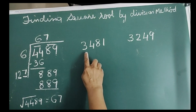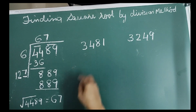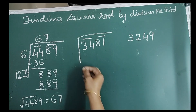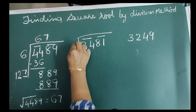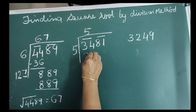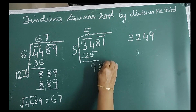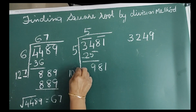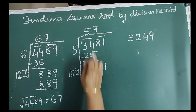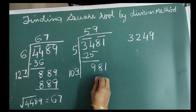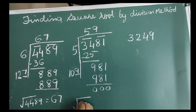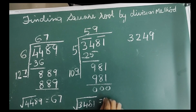Next number is 3,481. Place the bar, then find the divisor and quotient as 5. 5 times 5 is 25, remainder 9. Bring down the next bar, new dividend is 981. Double the quotient to get 10 with a blank. Guess digit 9, quotient also 9. 9 multiplied by 109 is 981, remainder 0. Therefore, square root of 3,481 is equal to 59.